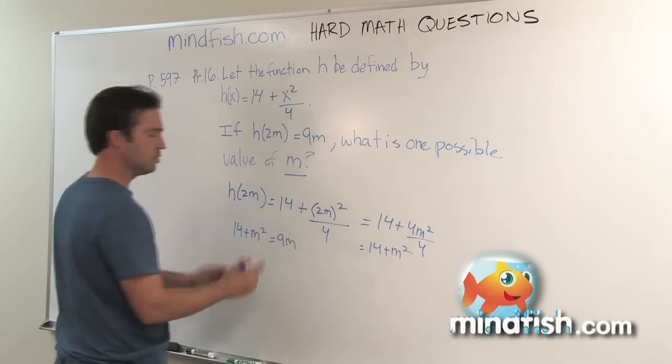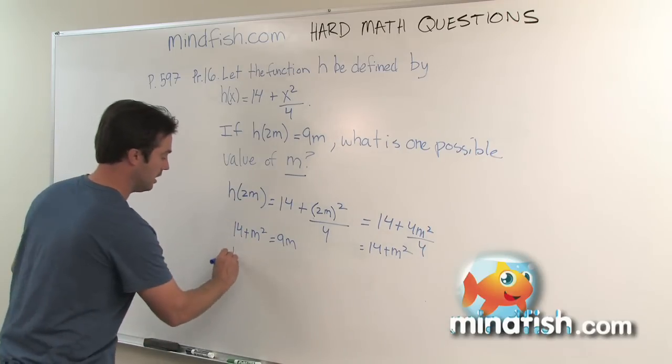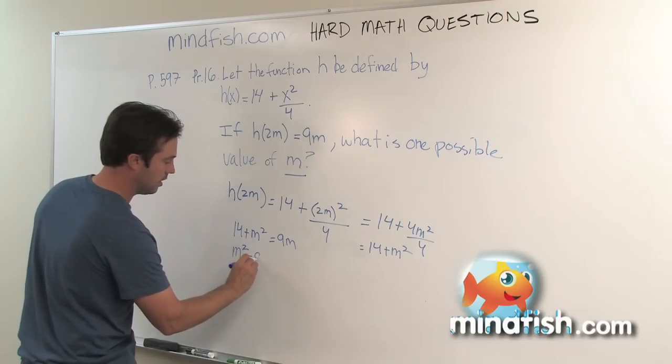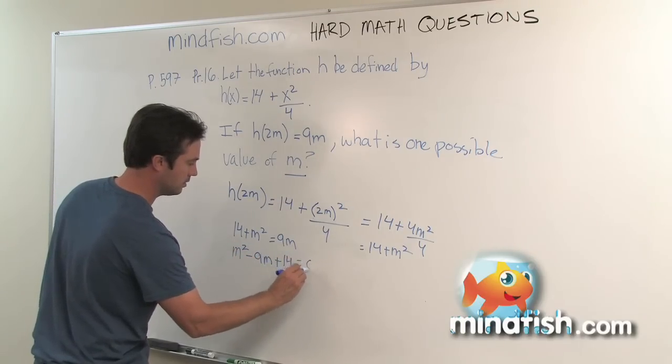So whenever I see an m squared, a constant, and an m, I realize this is a quadratic. I want to get it into that ax squared plus bx plus c form. So m squared minus 9m plus 14 equals 0.